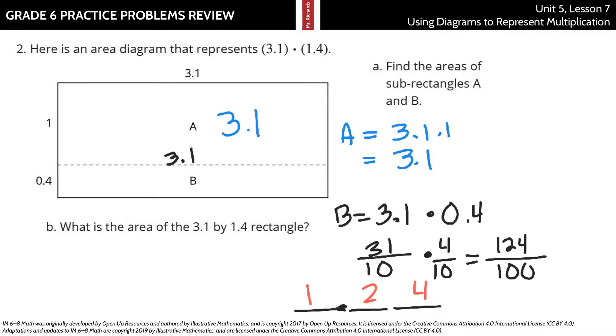And now to get the combined area, we have 3.1 plus 1.24. 0 plus 4, 1 plus 2, 3 plus 1, equals 4.34 hundredths square units.